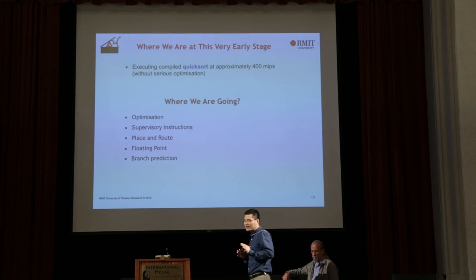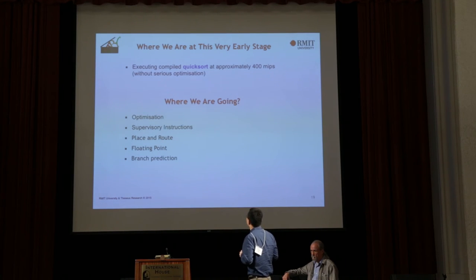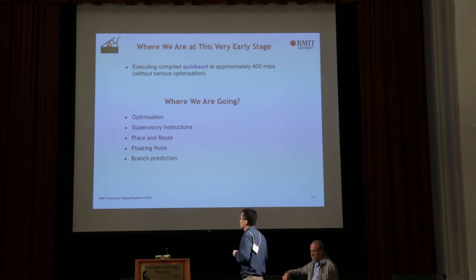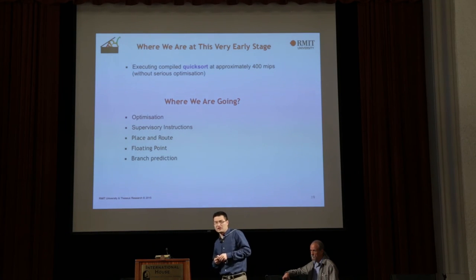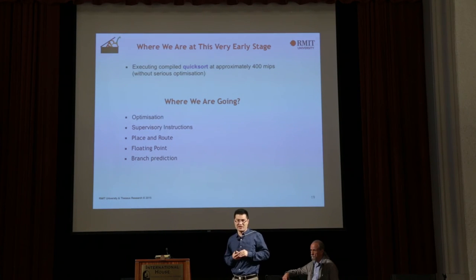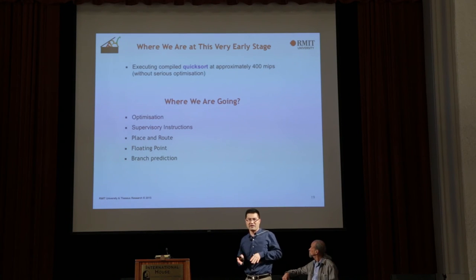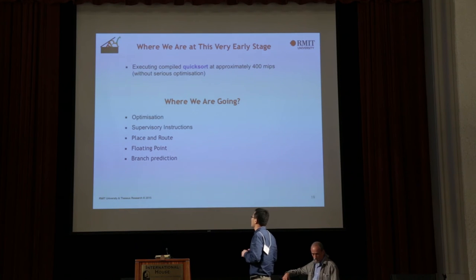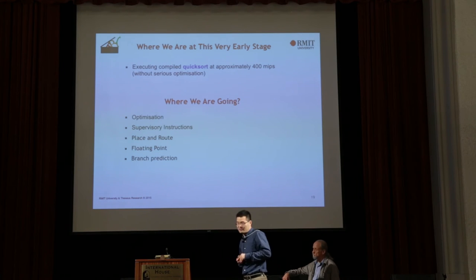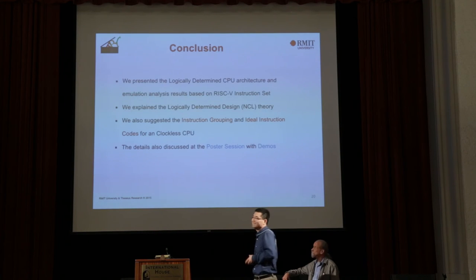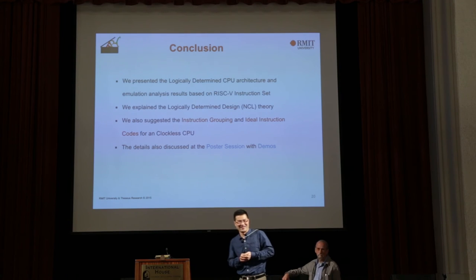We are at a very early stage, currently executing compiled C source applications. About 400 MIPS is our current performance, and we need more optimization for timing, area, and power. We also need to add supervisor instructions, place and route, a floating point unit, and branch prediction. That's all — any questions?